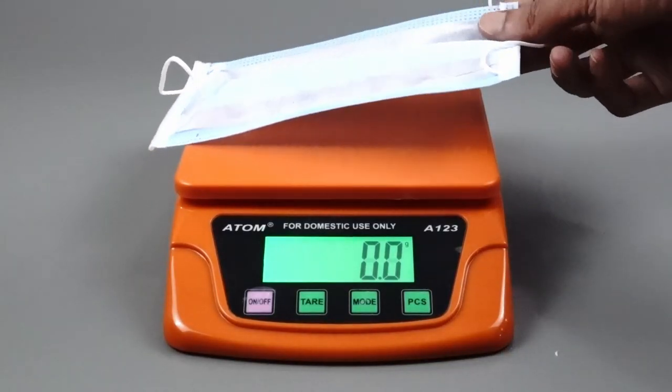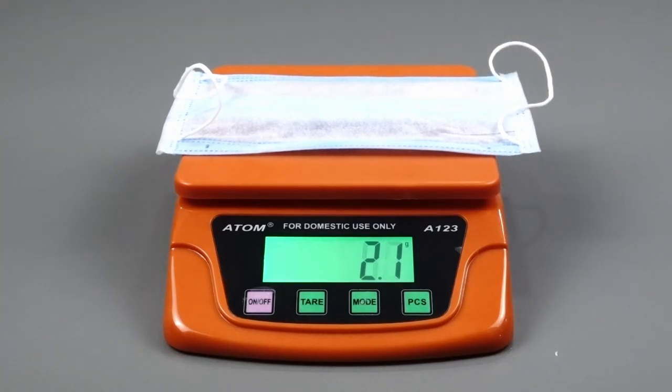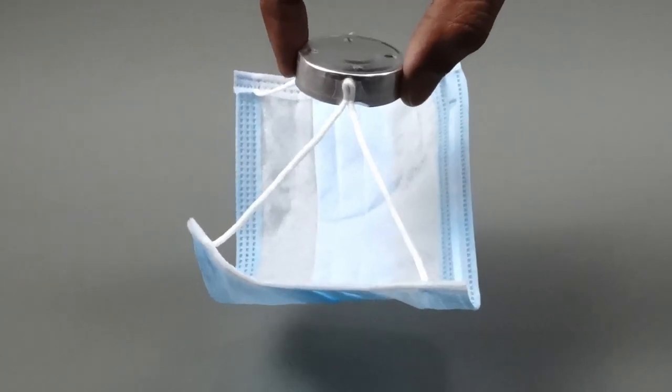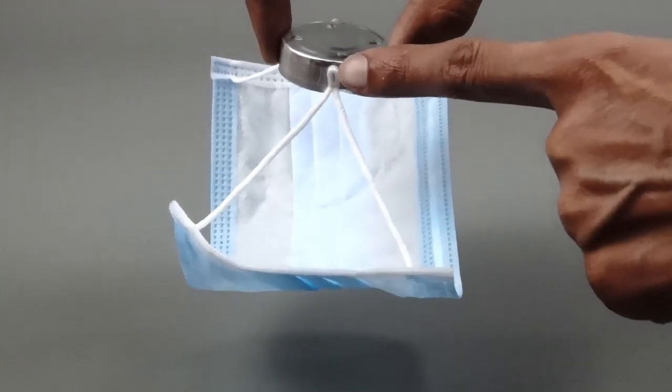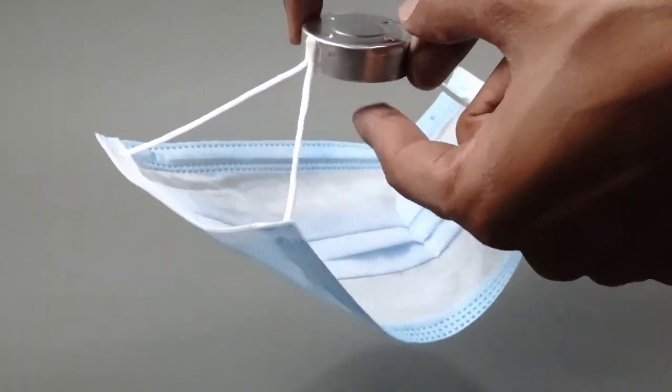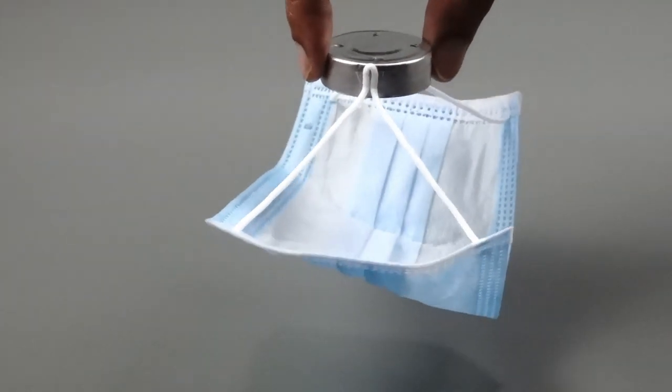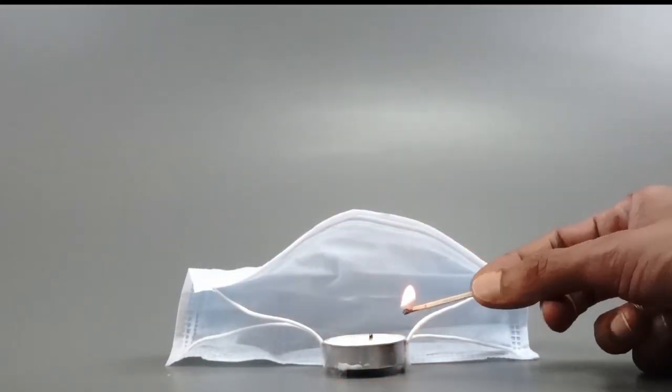First measure the mass of the tea light candle and mask with the help of a digital weighing machine. Now attach the thread of the mask string by sellotape to the candle as shown here. The thread should be stuck equally on both sides to keep the candle horizontal. Your assembly is ready now.